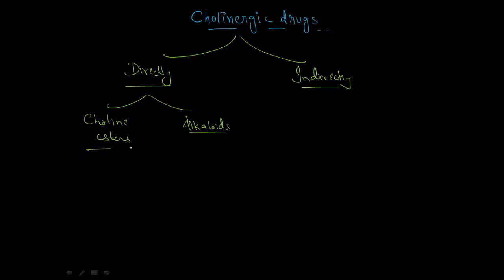For cholinesters, the main drug is acetylcholine, which is a directly acting cholinergic drug. Next is methacholine, an M2 agonist. Another is carbachol, and the last one is bethanicol, an M3 agonist.